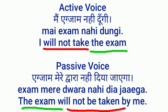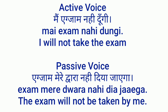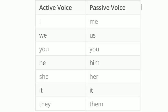'I will not take the exam' — 'the exam' is the object so it becomes subject. Passive: 'The exam will not be taken by me.' Third form of 'take' is 'taken.' So the exam will not be given by me.